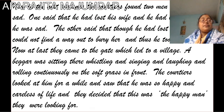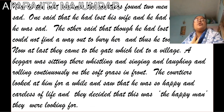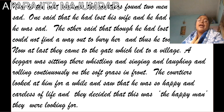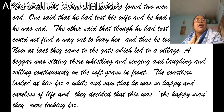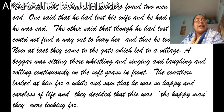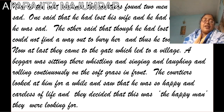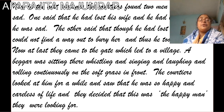The courtiers found two men — both were sad. One said that he had lost his wife and buried her, so he was sad. The other said that though he had lost his wife, he could not find a way to bury her — perhaps he was very poor — and thus he too was sad. At last they came to a village gate where a beggar was sitting, whistling, singing, laughing, and rolling on the soft grass. The courtiers looked at him and saw that he was so happy and carefree, and decided that this was the happy man they were looking for.